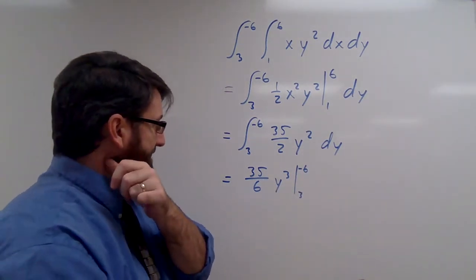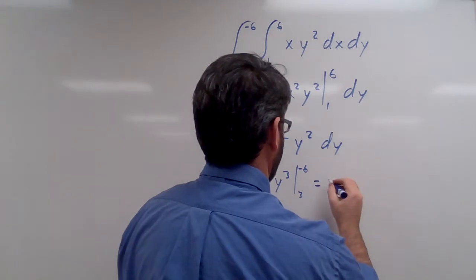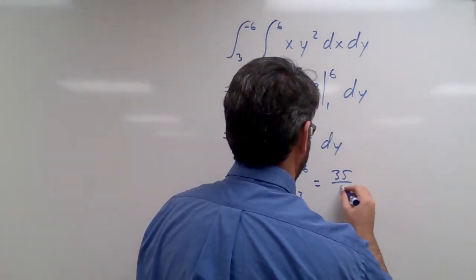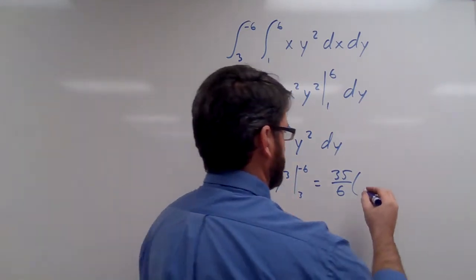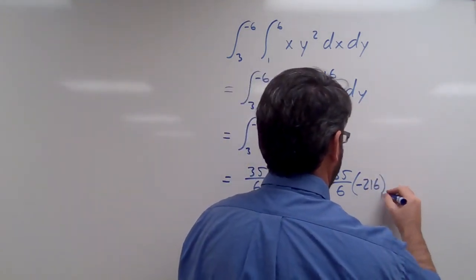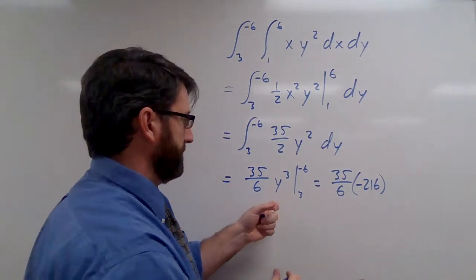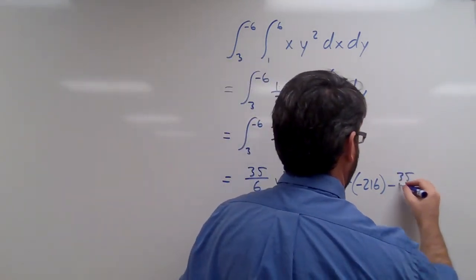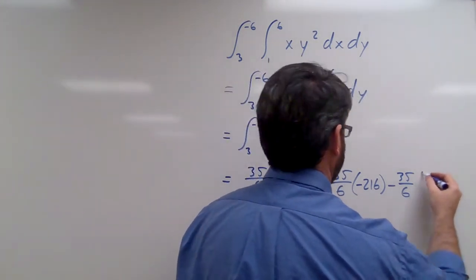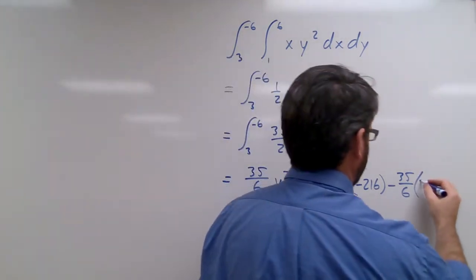So negative 6 cubed is going to be 35 over 6 times negative 6 cubed is negative 216 minus 35 over 6 times 3 cubed is 27.